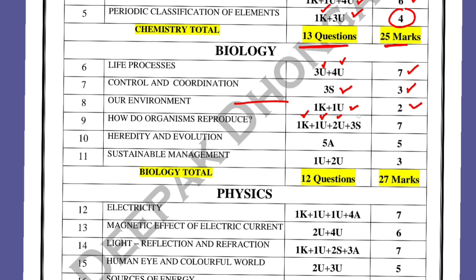How Do Organisms Reproduce: one MCQ, one understanding-based question (two marks), and three marks skill-based — so you can expect one diagram — total seven marks. Heredity and Evolution: five mark application question. Sustainable Management of Natural Resources: one one-liner and two mark understanding question — total three marks. So total 27 marks from biology and 12 questions will be asked.